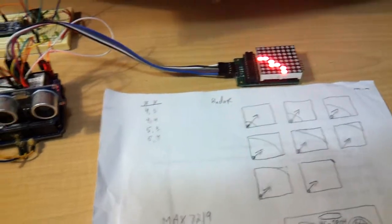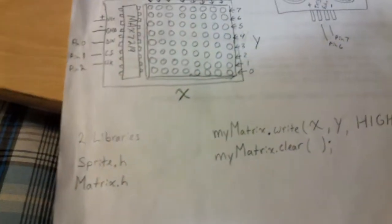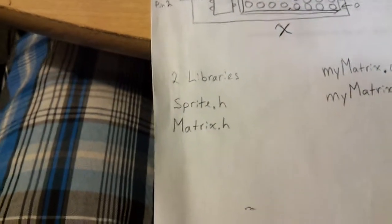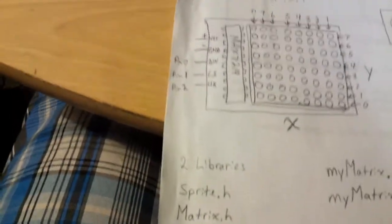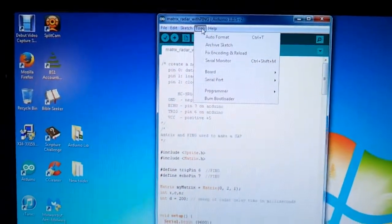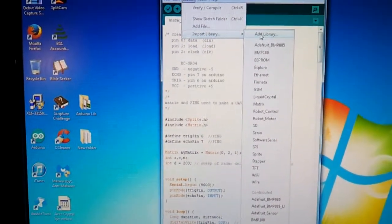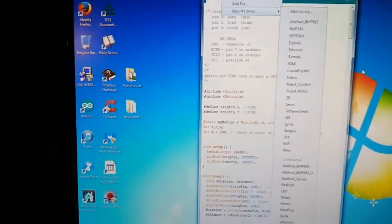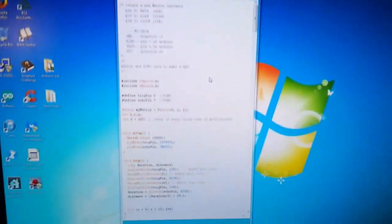It requires two libraries: Sprite.h and Matrix.h. If you need those, they're really easy to put in. Just email me or message me and I'll email you those libraries. You can put them on your Arduino by going to Sketch, Import Library, Add Library, and then browse for the file and put it in there. Very simple.